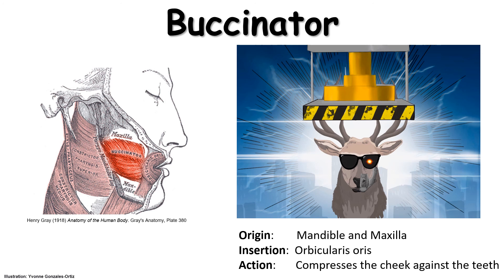So those are the components you need to know. The origin is the mandible and maxilla, the insertion is the orbicularis oris, and the action is to compress the cheek. Hopefully you'll recall the buccinator with the upper and lower jaw — the mandible and maxilla — made of metal, the orb of light going around it to recall the orbicularis oris, and the hydraulic press to help you remember its action.